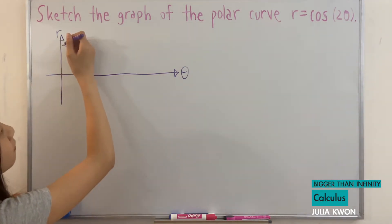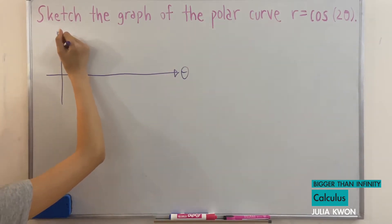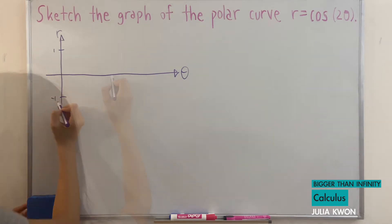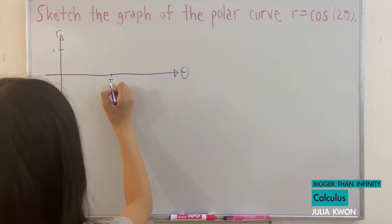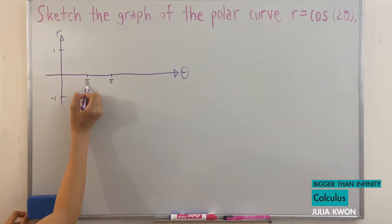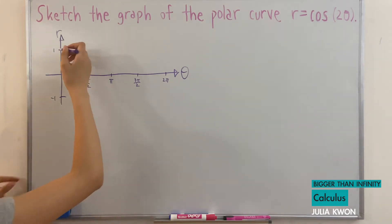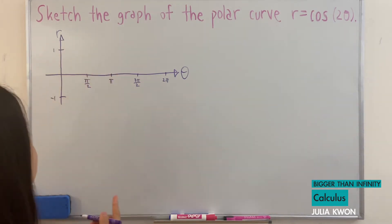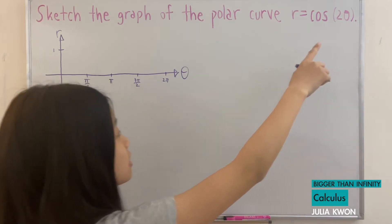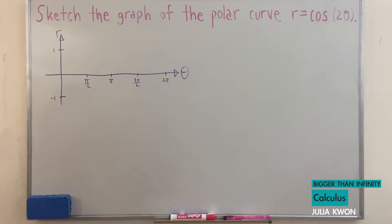And if we draw cosine 2 theta, we would have here's one and here's negative one. Here's pi and here's pi over two. One whole rotation in the graph of r is equal to cosine 2 theta will be just pi.